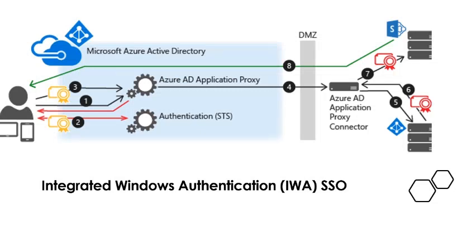Linked and disabled SSO are not that important, but Integrated Windows Authentication (IWA) SSO is really important and is used for on-premises only. Choose IWA single sign-on for applications that use Integrated Windows Authentication or claims-aware applications. For the application proxy connectors, it uses Kerberos Constrained Delegation (KCD) to authenticate users to the application — this is used basically for desktop applications.